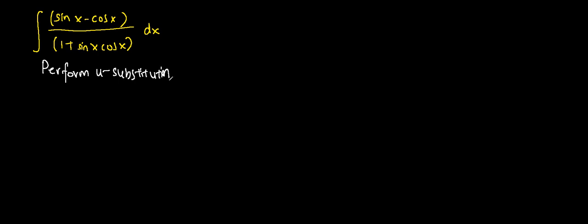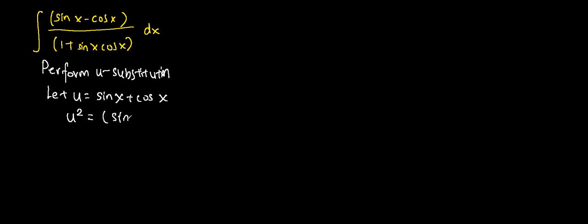We let u be equivalent to sin x plus cos x. Then we square both sides of the equation, so we get u squared equals to sin x plus cos x, the whole thing squared.